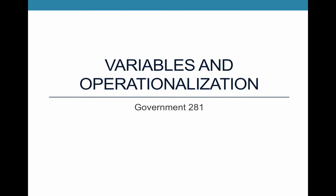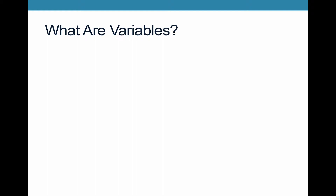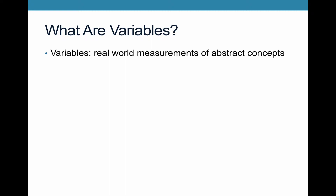This lecture will define what variables are. Variables are our way of translating abstract concepts — concepts discussed in the last video lecture — into something we can study in the real world. So in this lecture we'll define variables, and in particular dependent and independent variables, and then talk about operationalization, which is how we define the measurement of our variable. Variables are real-world measurements of abstract concepts, where we take abstract ideas that only exist in our minds and figure out what they look like in the real world.